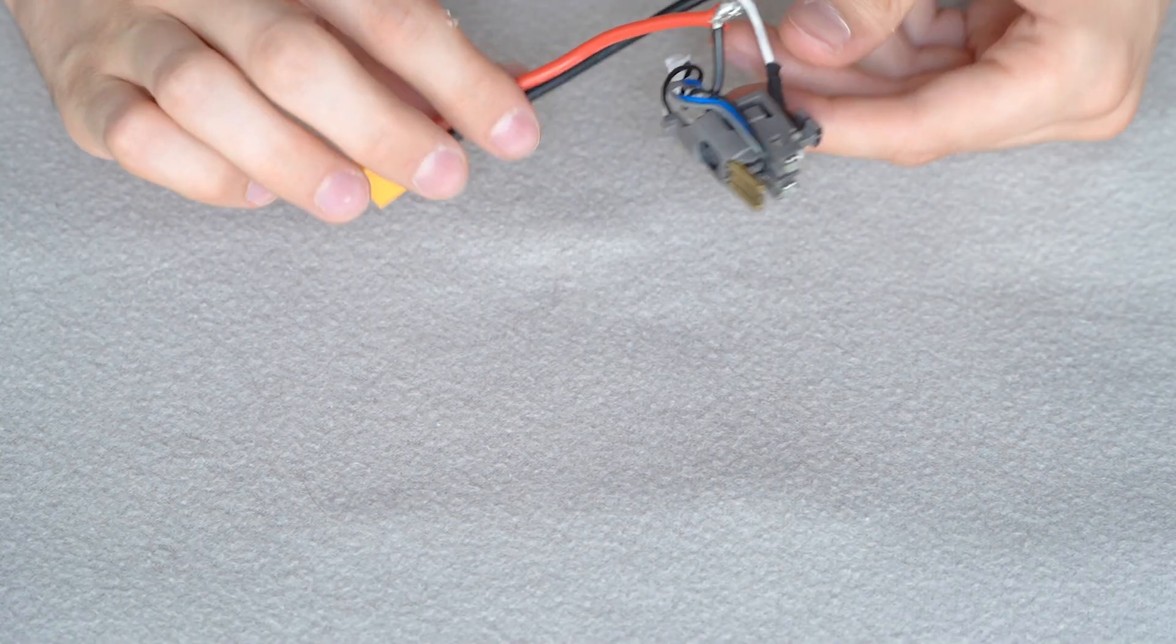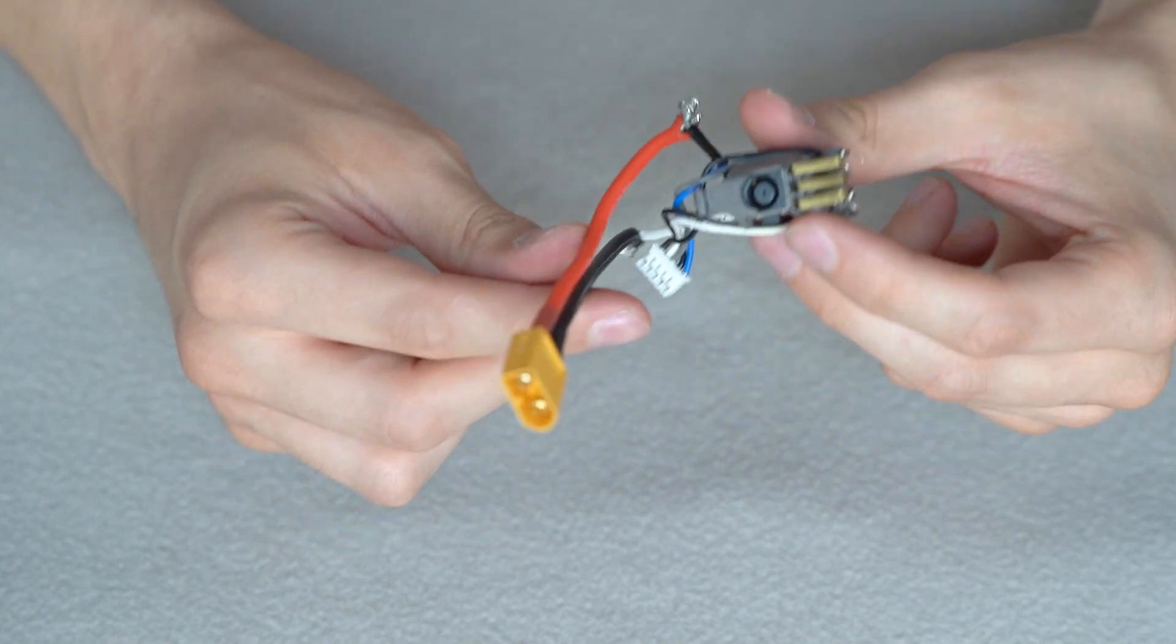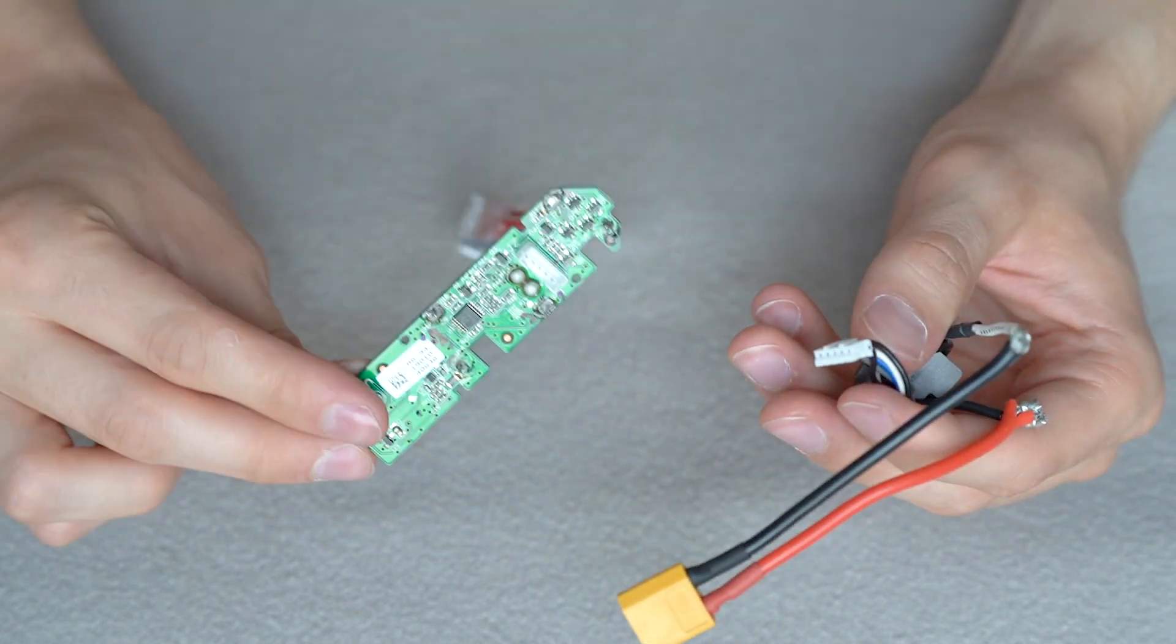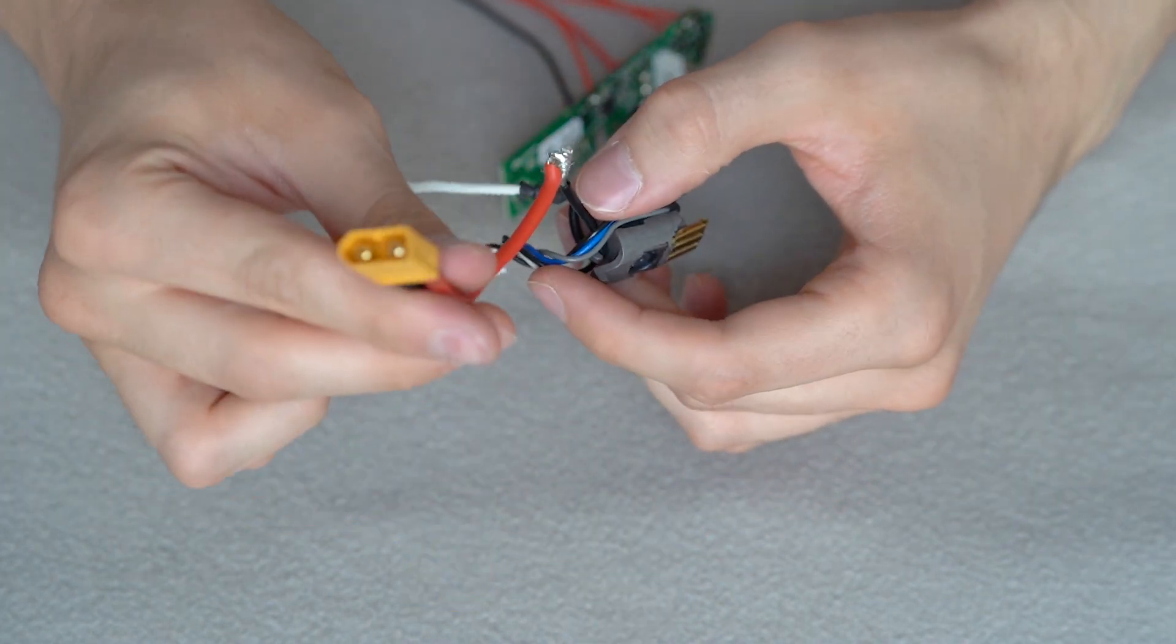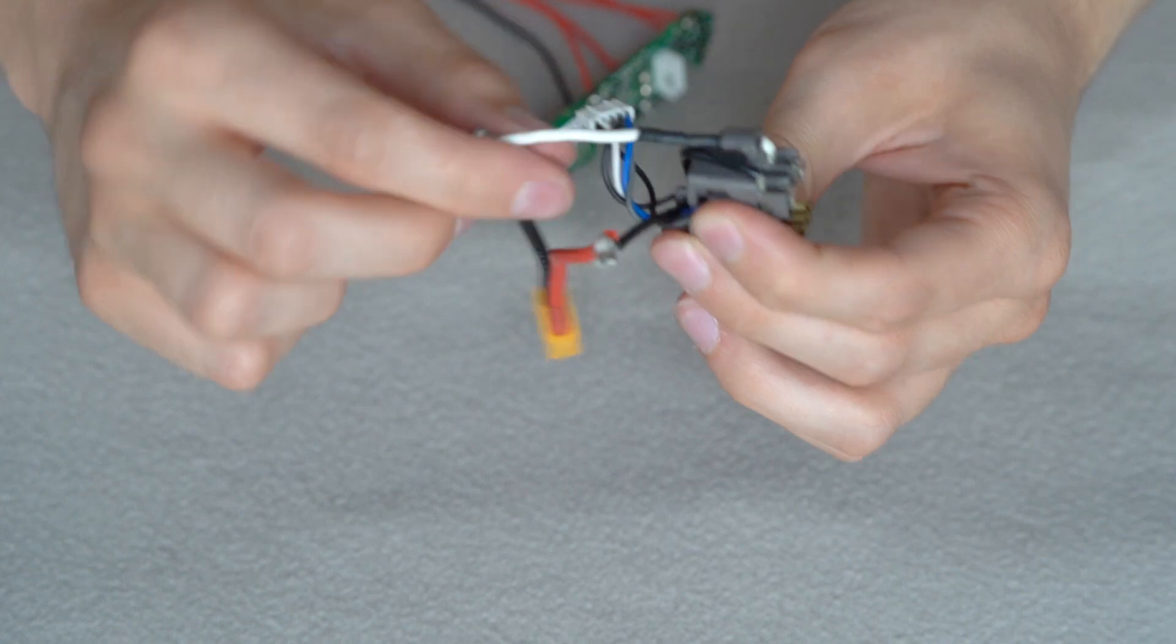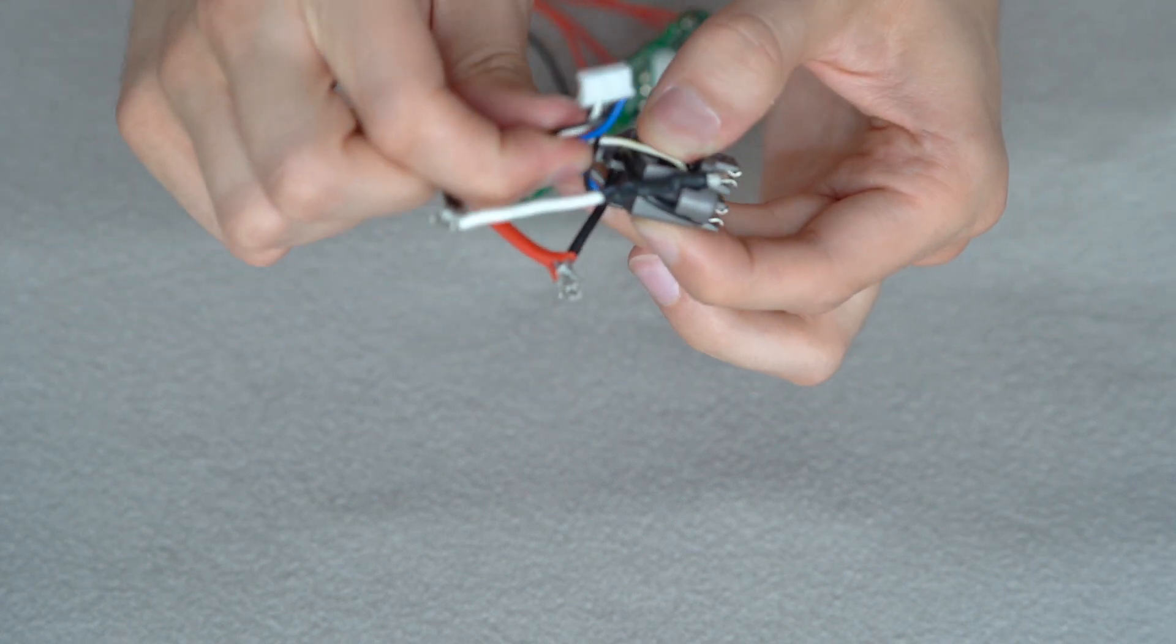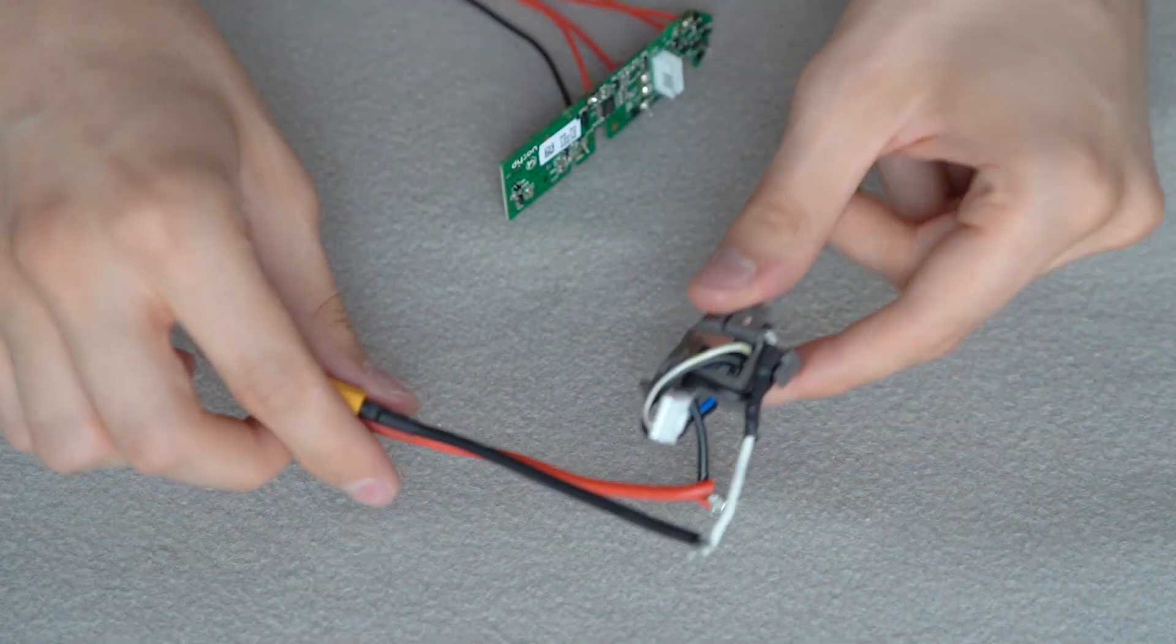Once you soldered everything it should look like this. I disconnected this connector from the board in order to solder easier, so I soldered the connector XT60 with its wires directly to the wires of the discharge ports. And this one was original connector and it stays like that, so that is one part of it.